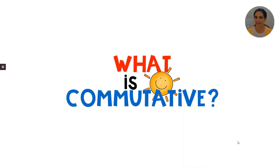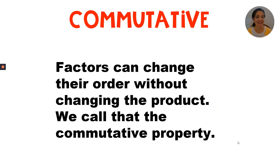What is commutative? Do you know? Factors can change their order without changing the products. We call that the commutative property.